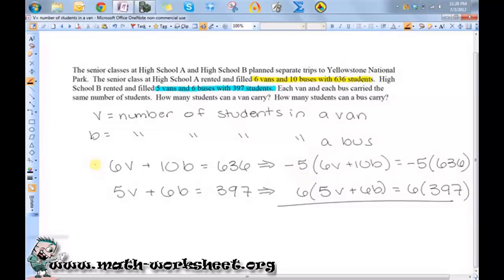So if I number these, this is the first one, this is the second one, so 1, 2. So let's find out what I get in equation 1 when I distribute the negative 5. I'll get -30v - 50b = -3,180.